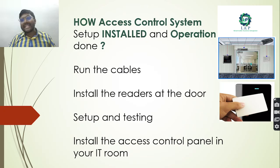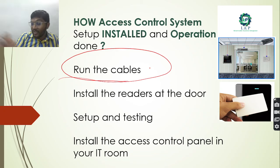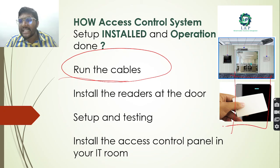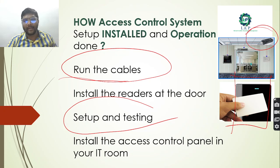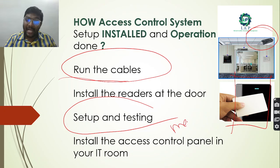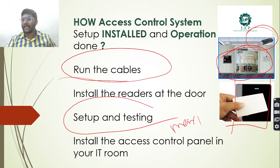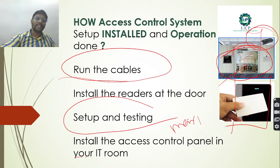For installation, first and foremost we need to set up and test, then install access control panels. These should be located either in an IT room or, for installations covering multiple doors, they should be in specific dedicated rooms, which makes controlling and maintenance easier.